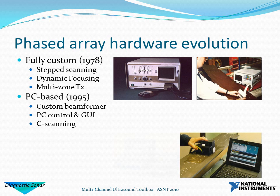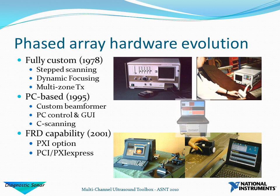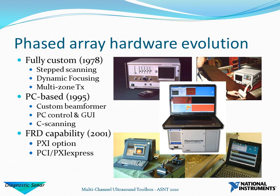This started migrating to PC-based hardware in the mid-1990s; however it still had to use a customized beamformer. The PC-based system was primarily for control and for the graphical user interface, but the position sensing capabilities of PC systems allowed us to provide positioning systems for C-scanning. This migrated further to using what we call full raw data capability, starting around about 2001, both for standard PXI and also for the serial interface PXI-PCI buses later on.